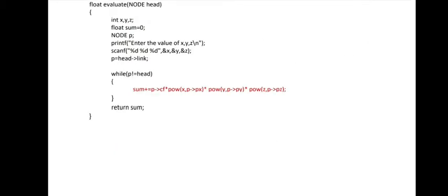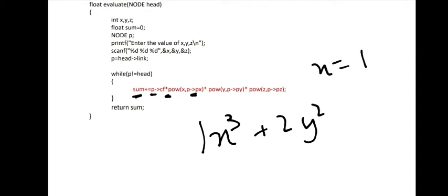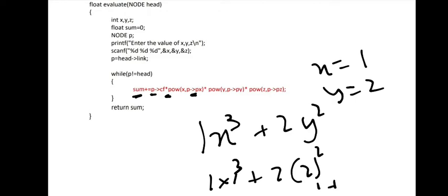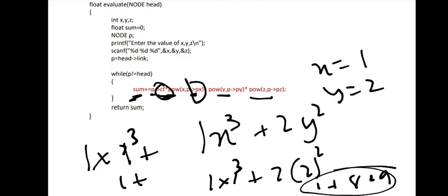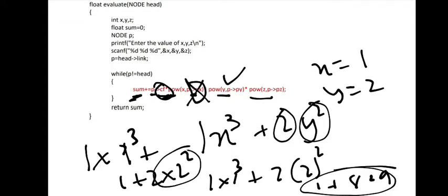Evaluation: sum is accumulated as coefficient times the variable powers. For example, 1x³ + 2y² with x=1, y=2 gives 1×1³ + 2×2² = 1 + 8 = 9. In code, first iteration computes p->cf × x^(px) × y^(py) × z^(pz); since py and pz are zero those terms drop out. Next iteration adds p->cf × y² = 2×4 = 8. Sum becomes 9, which is returned. That's the evaluate function.